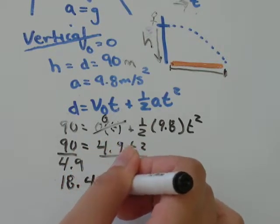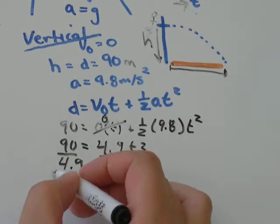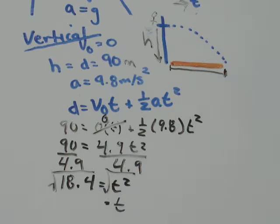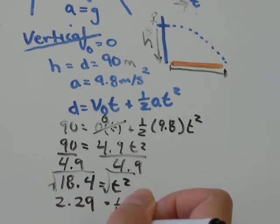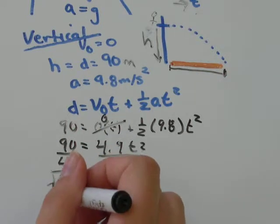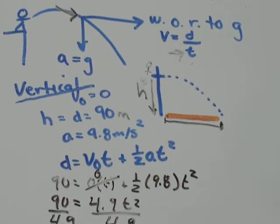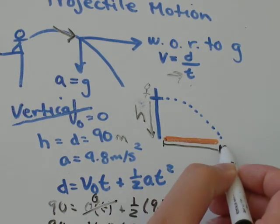and that equals T squared. To find regular T, you just need to square root both sides. The square root of 18.4, I get is equal to 4.29 approximately. It was just a long decimal, so I'm going to round that to 4.29 seconds. So, I'll go back up here. The time it takes to hit the bottom.